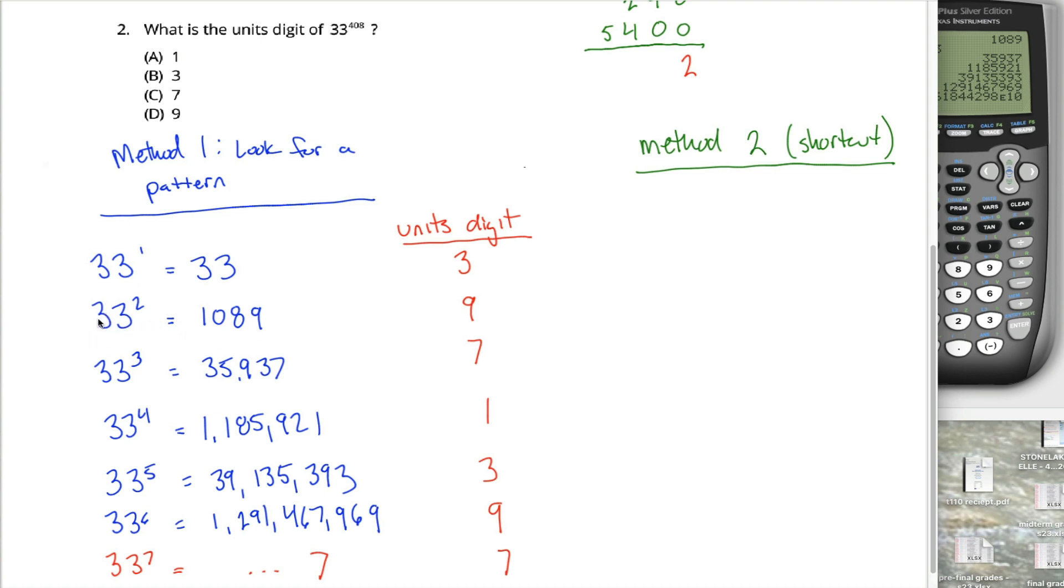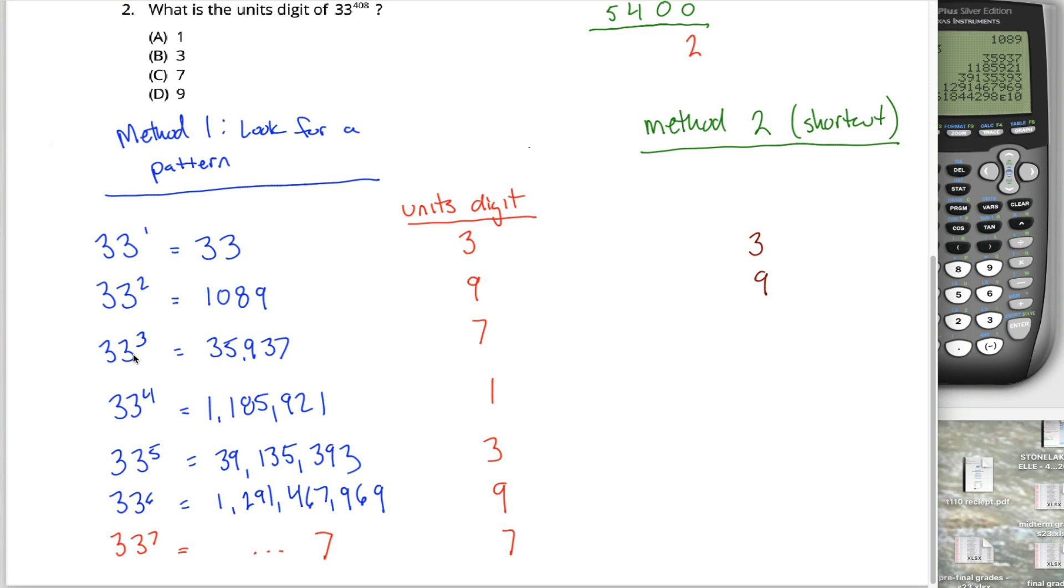I don't have to worry about the 30 part of it. I just take three times three and get nine. My unit's digit will be nine here. I already knew the unit's digit from 33 to the first power was a three. So I guess I should write that down.